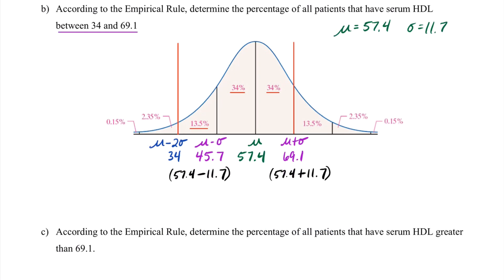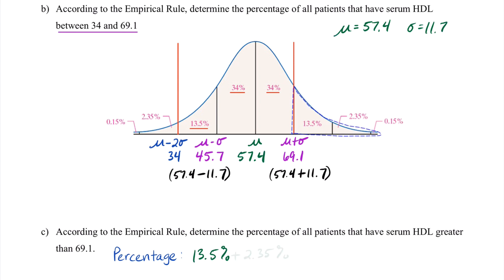Continuing to Part C with the same principle: determine the percentage of all patients that have serum HDL greater than 69.1. Since 69.1 is our lower limit, we need to add up the percentages to the right of that mark. Therefore, our percentage would be 13.5% plus 2.35% plus 0.15%, giving us a total percentage of 16%. And we're all set with our application of the empirical rule.